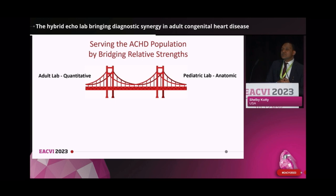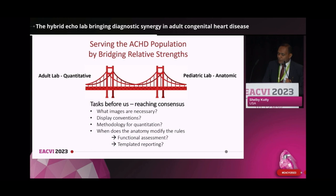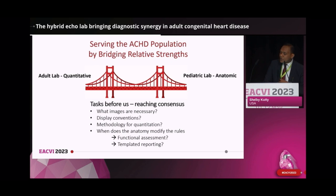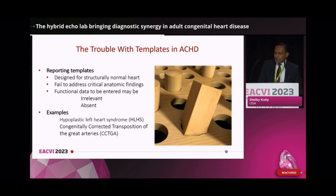At this point, we may be wondering what it would take to serve the ACHD population by bridging the gap between the two approaches. It appears we must reach consensus on what images are necessary, how they need to be acquired, how they need to be displayed, and the methodology for quantitation. But there are at least a couple of other considerations: first, when does the structural anatomy modify the needs for functional assessment? And second, how to address templated reporting? We'll briefly consider the problems of reporting ventricular function in complex congenital hearts, and the challenges of doing so under the constraints of a reporting template designed for structurally normal hearts.